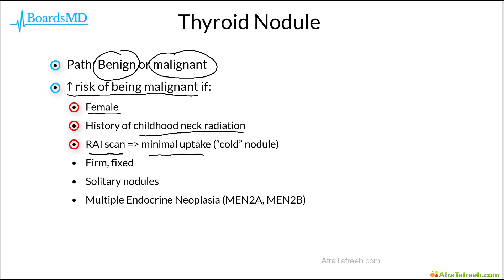then this suggests that the patient's nodule is a cold nodule, and this means that malignancy is far more likely. Additionally, if the nodule is firm or fixed, this suggests that it has fixated to surrounding structures, thus suggesting malignant infiltration. Solitary nodules are also more likely to be malignant, in contrast to, for example, toxic multinodular goiter, which is a benign condition.